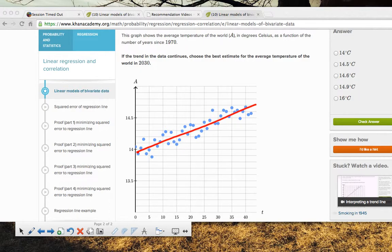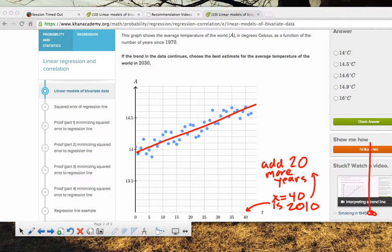If the trend in the data continues, choose the best estimate for the average temperature of the world in 2030. So what I'm going to notice first is that an x of 40 is 2010. And so I need to add 20 more years. And that is not on the graph, so I can't solve this one graphically because it would be way out here on the graph somewhere. And so I'm going to do a little bit of algebraic work.